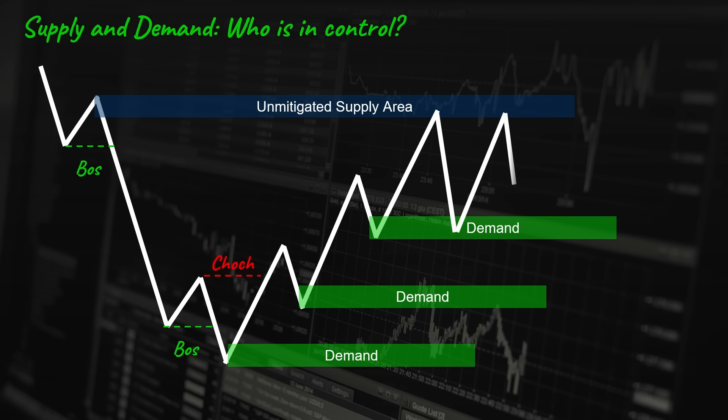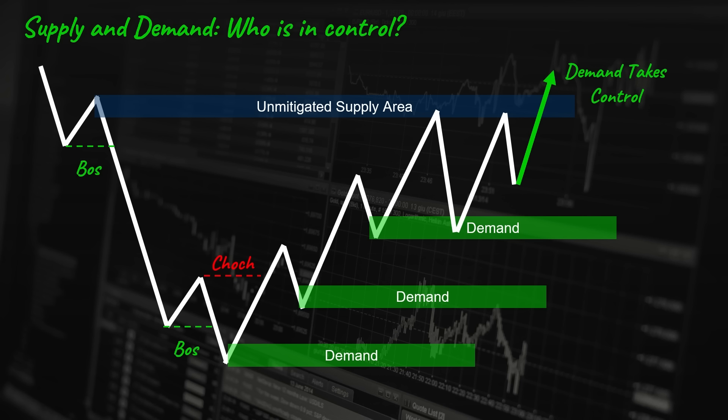This bullish bias continues until the price taps into an unmitigated supply area. After encountering this area, we no longer consider this market bullish because it has the power to reverse the price and induce a temporary correction. So we have a battle between buyers and sellers. The market could enter a phase of consolidation between the demand and supply until one side regains control. If the market breaks the demand zone to the downside, the supply took control and we can take short entries until we reach the next unmitigated demand zone. On the other hand, if the price breaks the supply area to the upside, the demand is in control and we can take long entries until we reach the next unmitigated supply area.